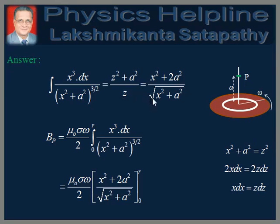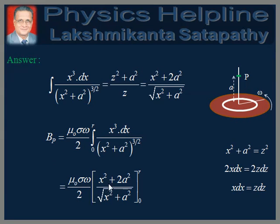So z = √(x² + a²). Therefore Bp = μ₀ sigma ω / 2 × integral from 0 to R of x³ dx / (x² + a²)^(3/2). We have evaluated this indefinite integral. Therefore Bp = μ₀ sigma ω / 2 × [(x² + 2a²) / √(x² + a²)] evaluated between limits 0 to R.